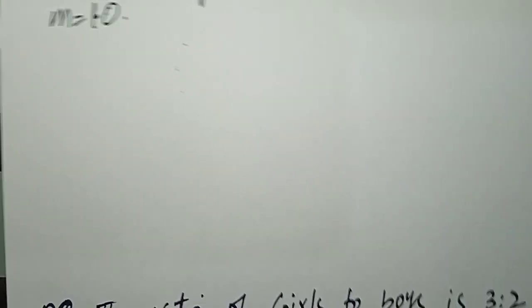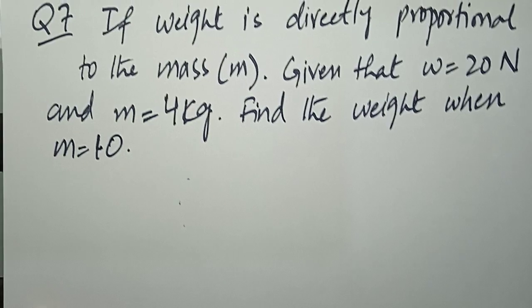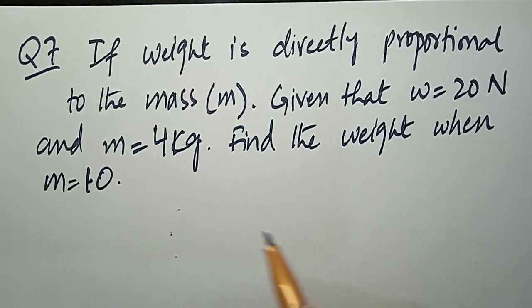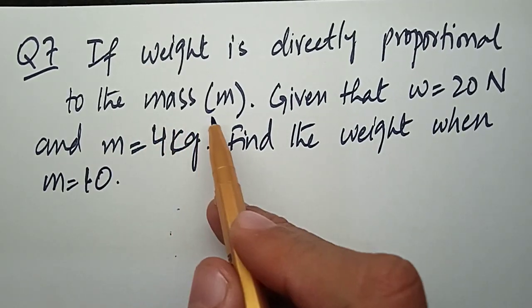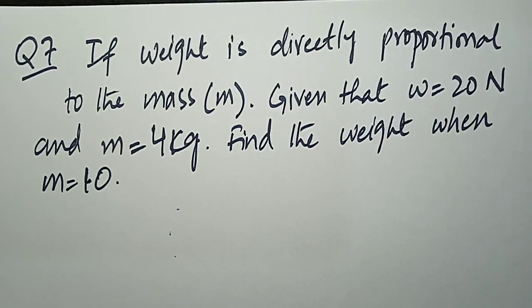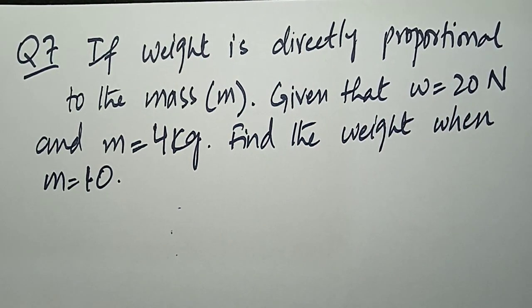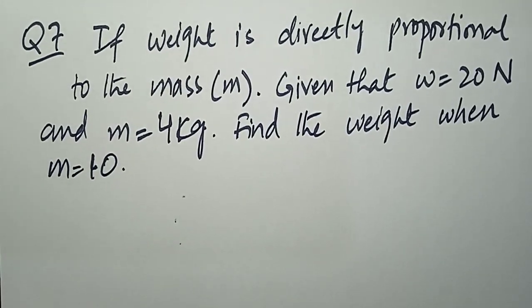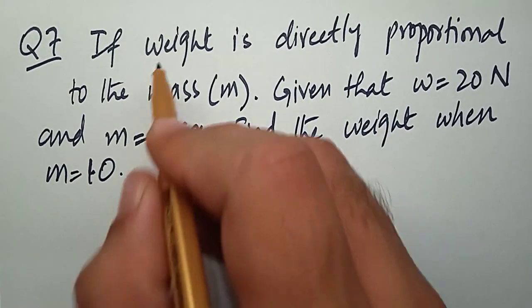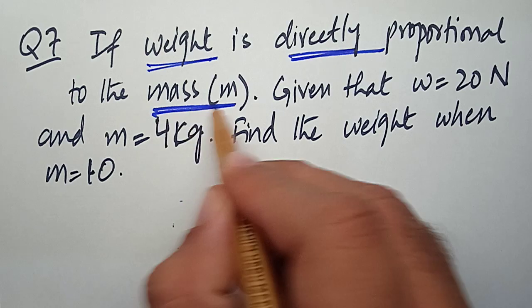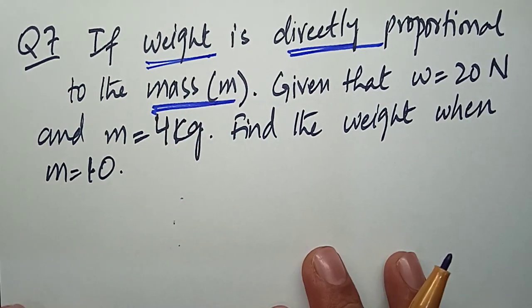The next question: if weight W is directly proportional to mass M, given that W equals 20 N and mass equals 4 kg, find the weight when M equals 10 kg. We know that weight is directly proportional to mass.